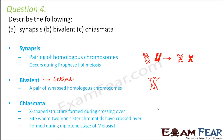Chiasmata is when crossing over actually takes place. It is an X-shaped structure where the crossing over occurs. This X-shaped structure will have some features of the maternal chromosome and some features of the paternal chromosome. Chiasmata is formed during the diplotene stage of meiosis 1. So: synapsis happens during zygotene, tetrad formation happens in pachytene, and chiasmata formation happens during the diplotene stage of meiosis 1.